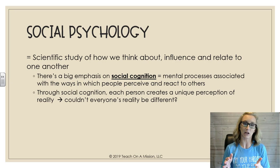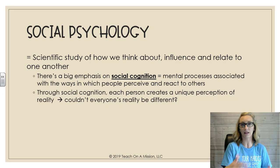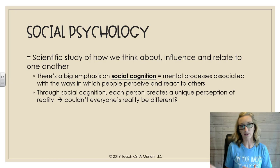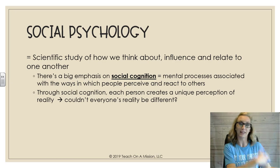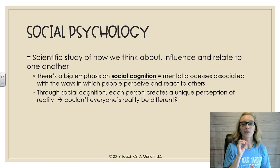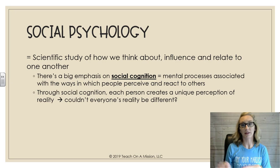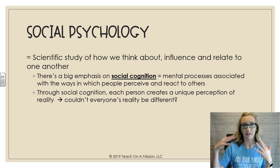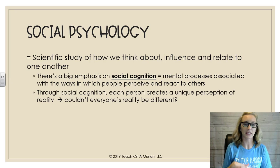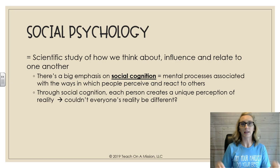There's a big emphasis on social cognition. When you think 'thinking,' think 'cognitive.' These are the mental processes associated with the ways in which people perceive and react to others. It's through that process that each person creates a unique perception of reality — and couldn't you say that everyone's reality could therefore be different? That's just some food for thought.